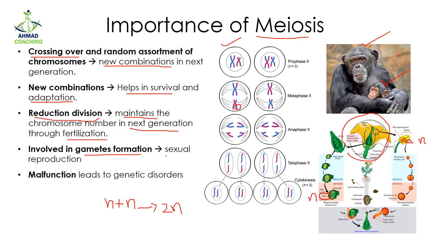Any malfunctioning in meiosis leads to genetic disorders, in which the number of chromosomes may increase or decrease, and some kind of deletion can happen, so the next generation will have some kind of disorder. Examples include Down syndrome, Klinefelter syndrome, and Turner syndrome. These are the importances of meiosis.